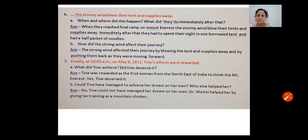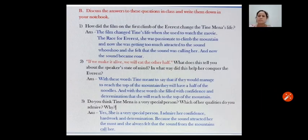Number 7, Finally at 10:45 am on 9th May 2011, Time's effort was rewarded. A. What did Tyne achieve? Did Tyne deserve it? Answer is, Tyne was rewarded as the first woman from the north-east of India to climb Mount Everest. Yes, Tyne deserved it. B. Could Tyne have managed to achieve her dream on her own? Who else helped her? Answer is, No. Tyne could not have managed her dream on her own. Dr. Mithi helped her by giving her training as a mountain climber.